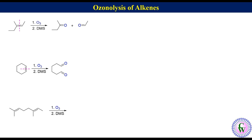In this example there are two alkenes, so cut the molecule through the double bonds to get three fragments, and then put oxygen at the terminus of each double bond to get the products, which are acetone, 4-oxopentanal, and acetaldehyde.